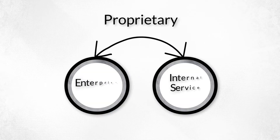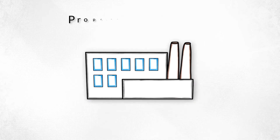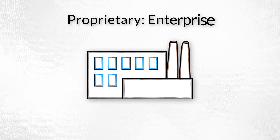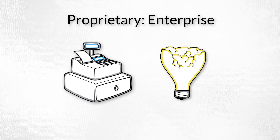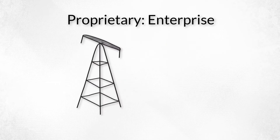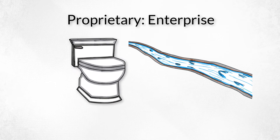Second is proprietary, which includes two categories. Enterprise funds account for business-type activities, where fees are assessed for service, such as electricity, natural gas, sewer, and water.